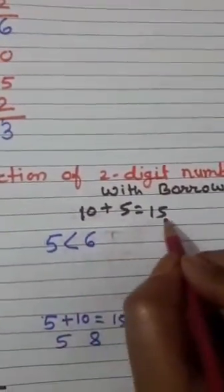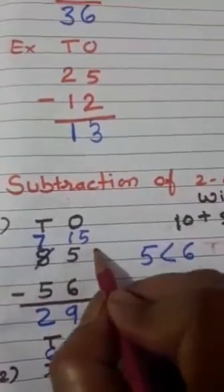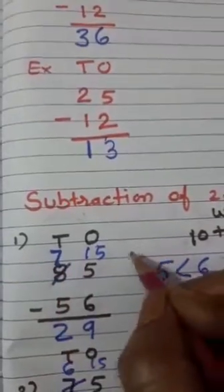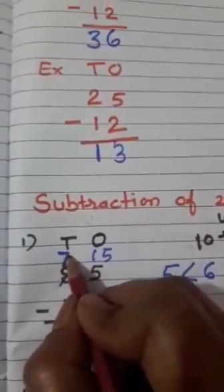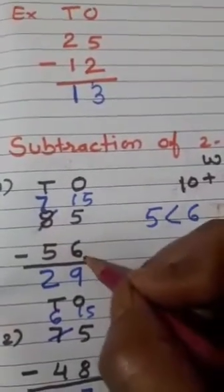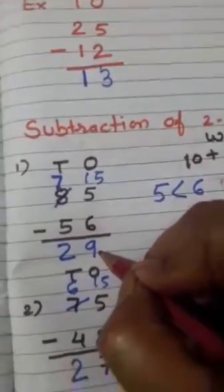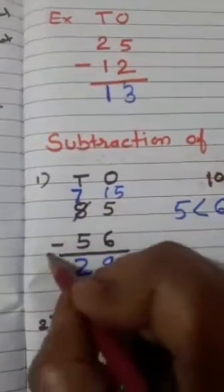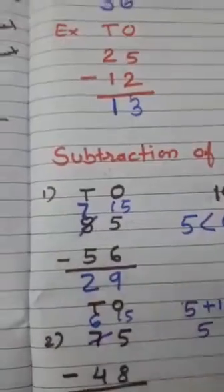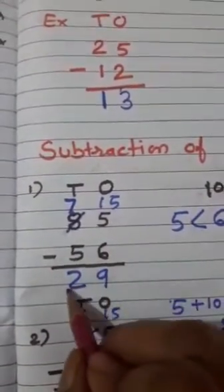To 5 becomes 15. Lekin humne 8 me se 1 ten 5 ko diya, to 8 becomes 7. Now subtract 1s with 1s: 15 minus 6 equal to 9. And 7 minus 5, how much? 2. So what is our answer? 85 minus 56 equal to 29.